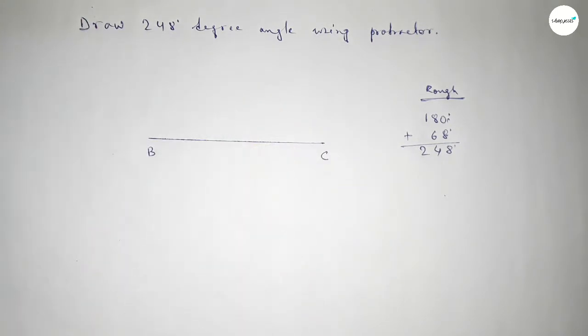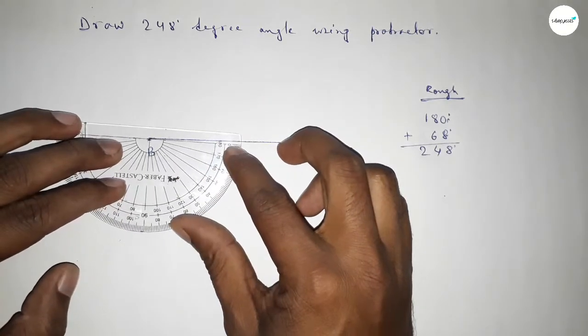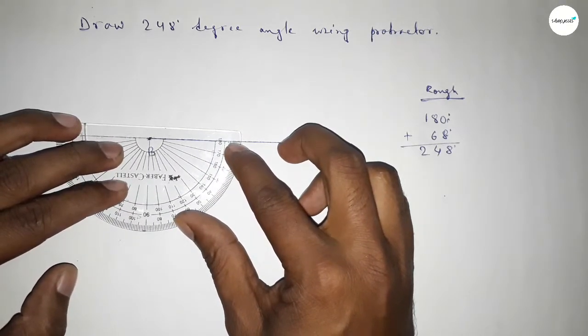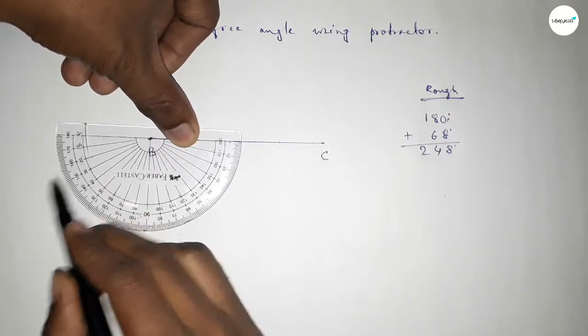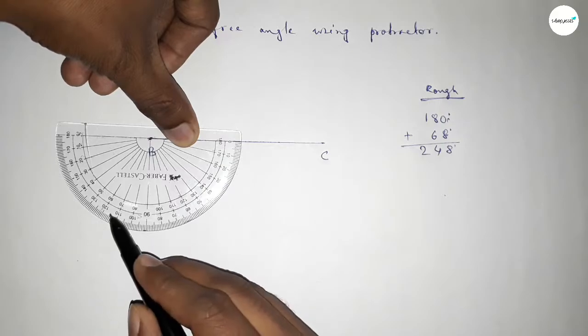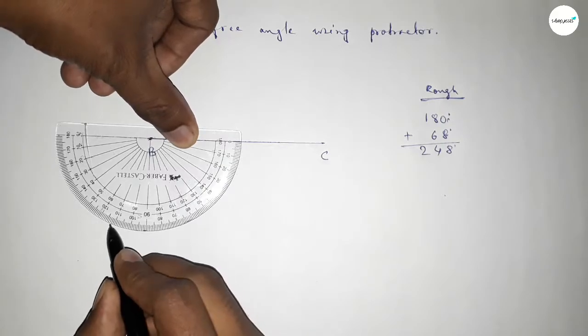Plus, putting the protractor on the point B by this way and counting 68-degree angle. So this is 180 degrees plus, this is starting 0, 10, 20, 30, 40, 50, 60, 65, 67, 68. So this is 68 degrees.